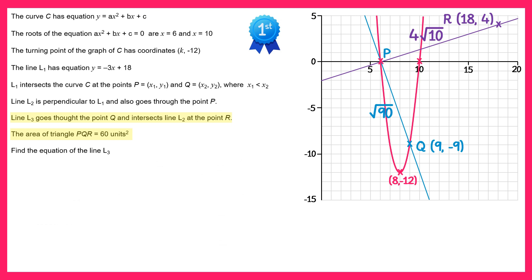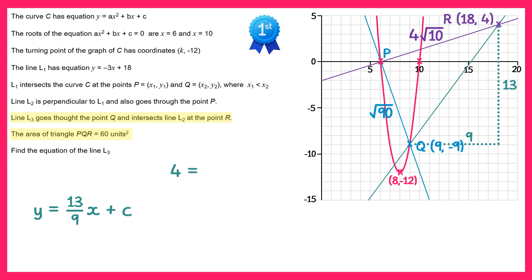We can now find the equation of line L3, which goes between Q at (9, negative 9) and R at (18, 4). Drawing a gradient triangle: the horizontal distance is 9 and the vertical distance is 13, so the gradient is 13 over 9. The equation is y equals 13 over 9 times x plus c. Substituting point R: 4 equals 13 over 9 times 18 plus c. The 18 and 9 cancel to give 2, and 2 times 13 is 26, so 4 equals 26 plus c, giving c equals negative 22. The equation of line L3 is y equals 13 over 9 x minus 22.